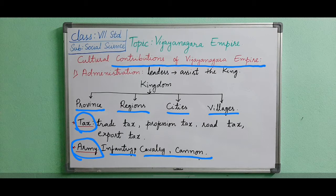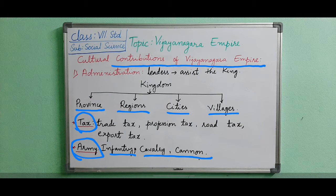Infantry means soldiers who are fighting on foot. Cavalry means the army which consisted of horses. They gave more importance to Arabian horses — at the time of Vijayanagara, Arabian horses were the center of attraction. These things are all related to the administration.